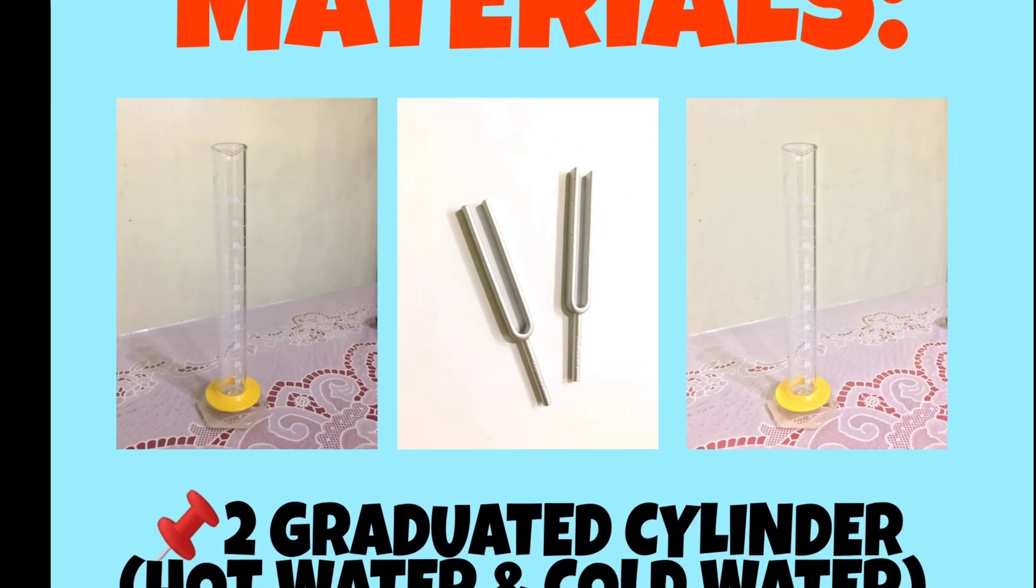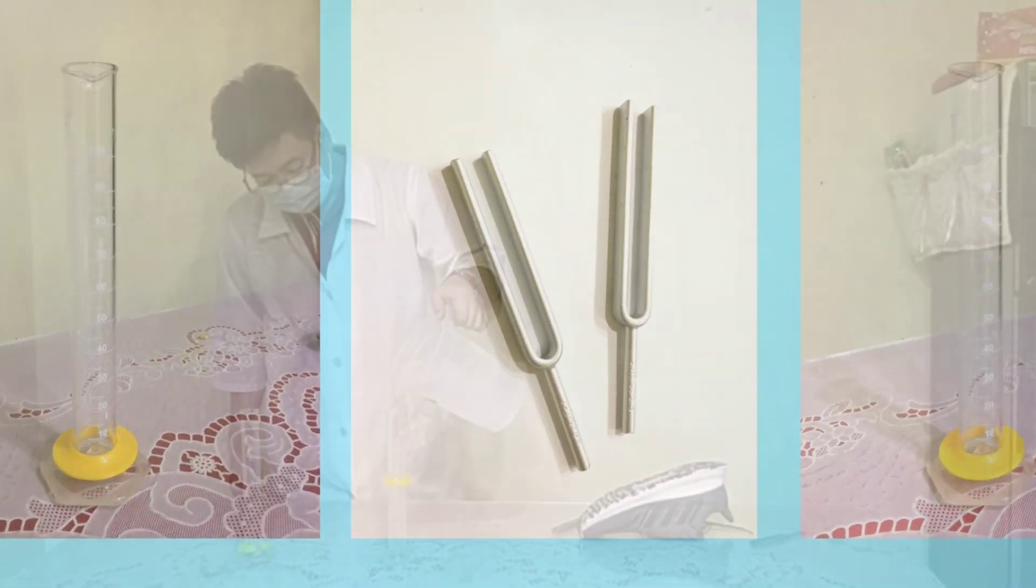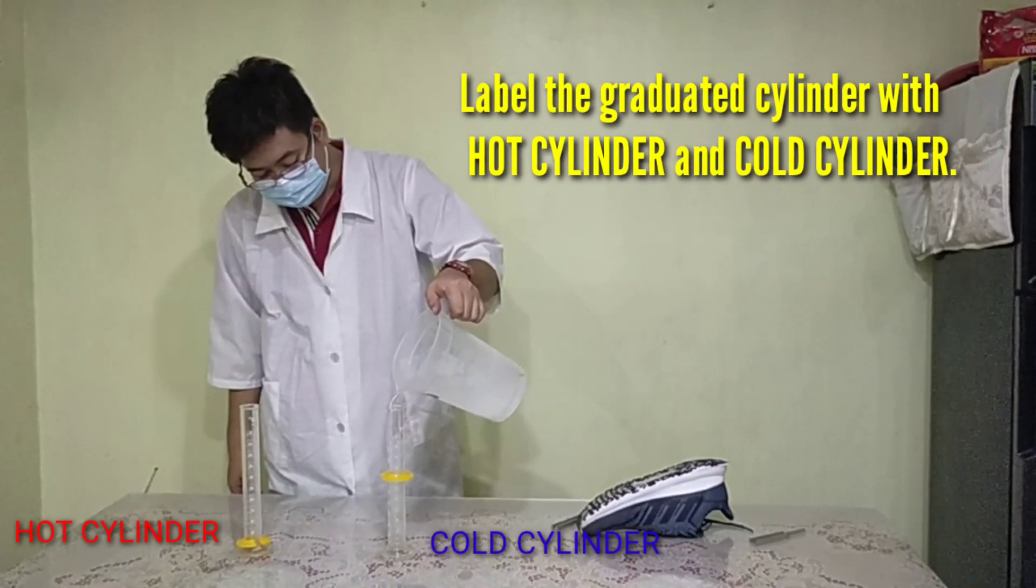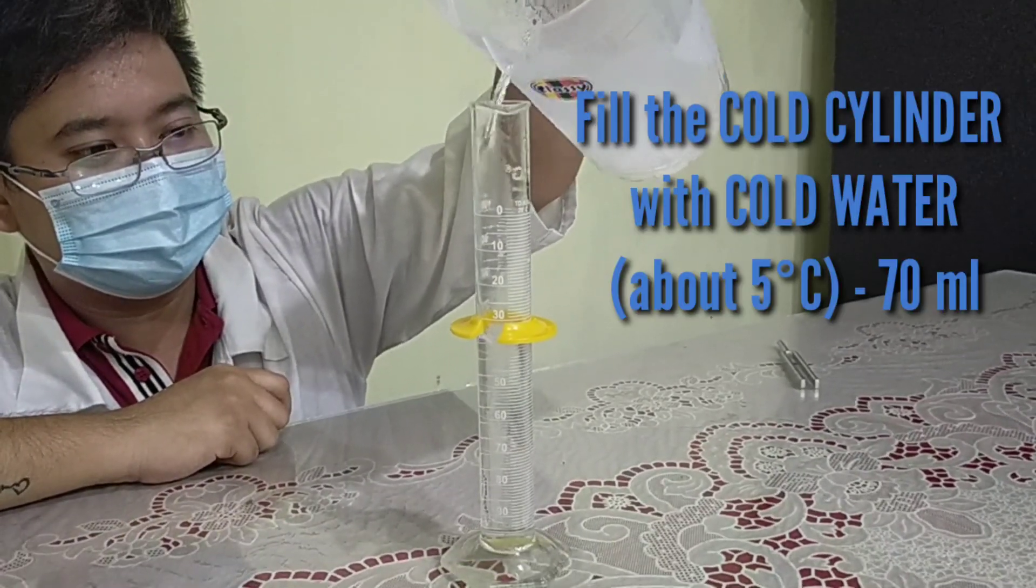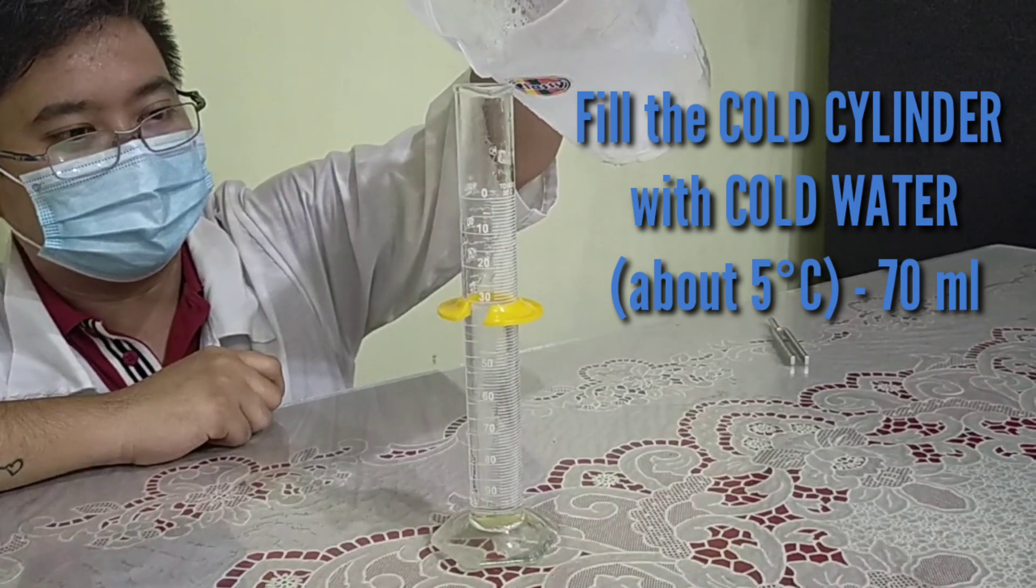Materials: 2 graduated cylinders and churning port. Label the graduated cylinder with hot and cold cylinder. Fill the cold cylinder with cold water.